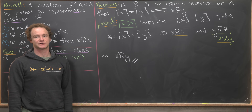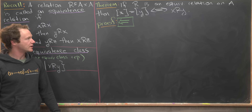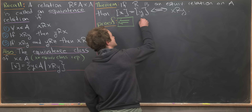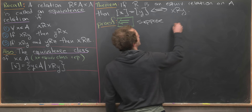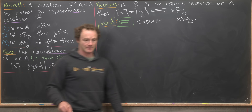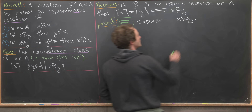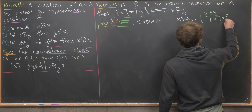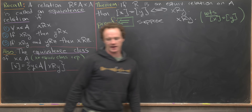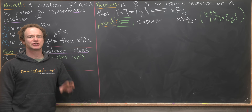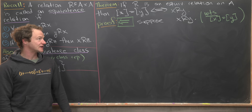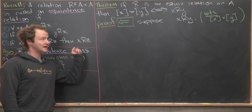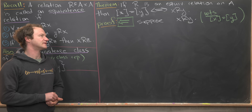Now let's do the reverse direction. We suppose that X is related to Y, and what we want to end up with is the equivalence class of X equal to the equivalence class of Y. Since we're trying to show two sets are equal, our best approach is double inclusion: we'll show the equivalence class of X is a subset of the equivalence class of Y and vice versa.